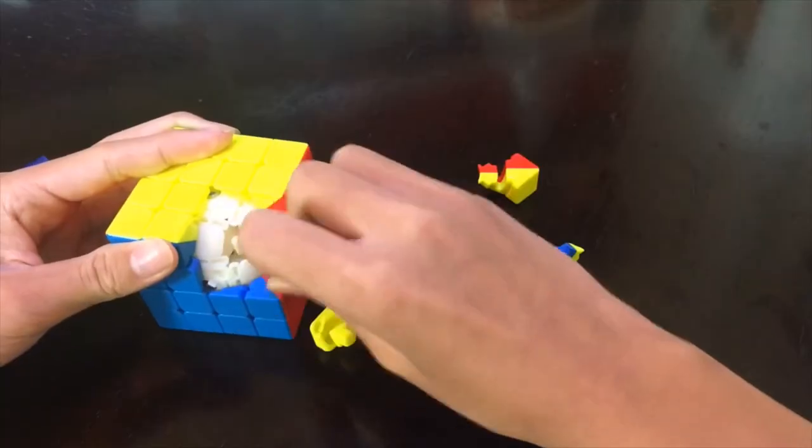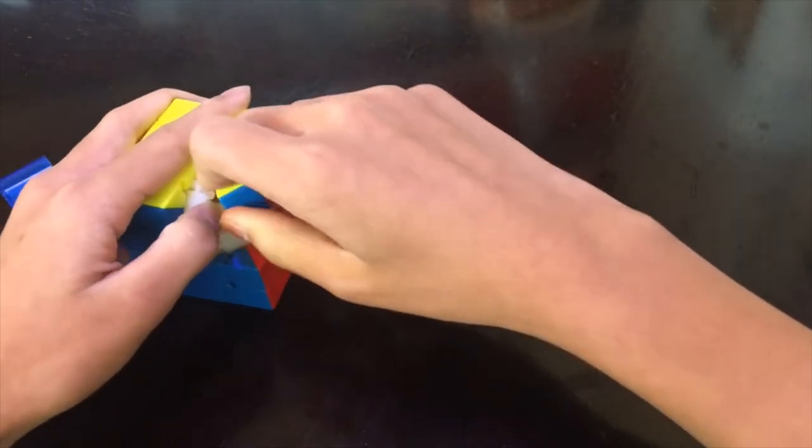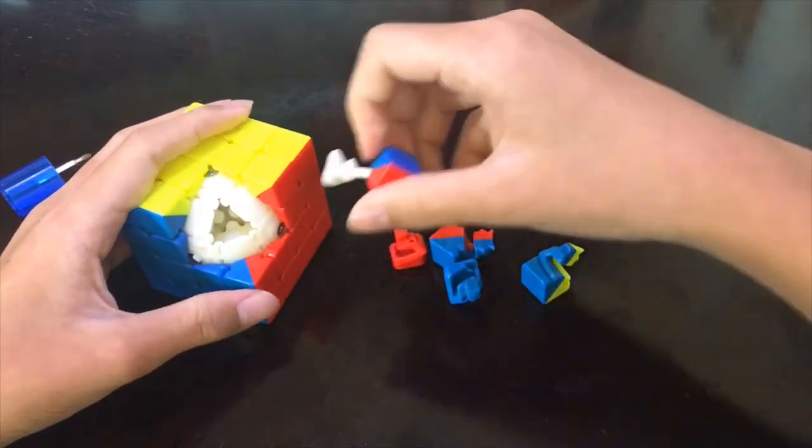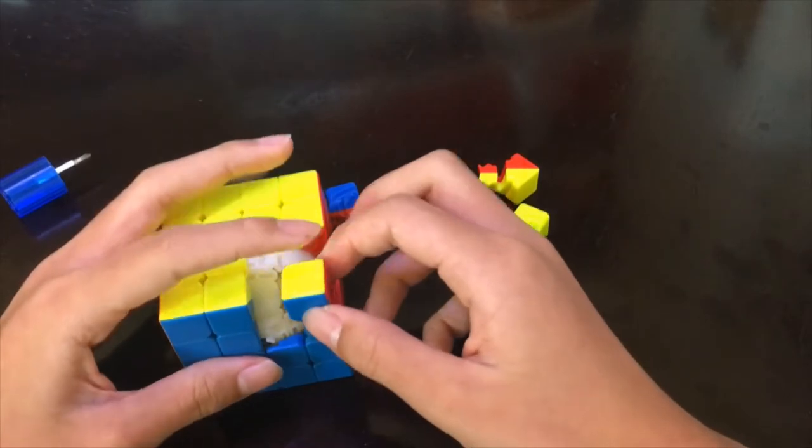Never mind. So here you can see we have the last last thing, so we still have a lot of pieces. So I'll have to do the corner first and then put in the centers. Oh no, I can't, how do you even put this big thing in?